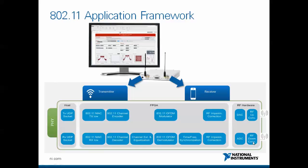On the receiver side, the signal is received, downconverted, and RF impairments are corrected. The signal is then detected and time and frequency synchronization is achieved. The signal is demodulated, the channel is estimated and equalized, and finally the signal and data fields are decoded. The lower MAC functionality checks if the packets are valid and provides them to the host.